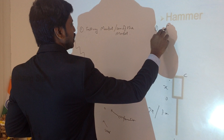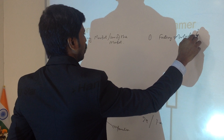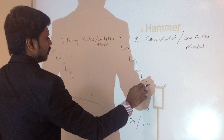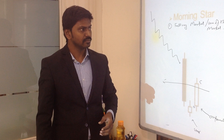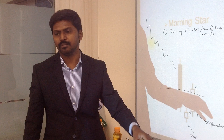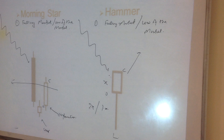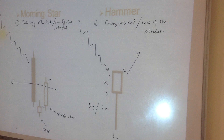The hammer pattern condition is the same as morning star: it must appear in a falling market, ideally at the low of the market. The lower the market position, the more dominant the pattern. In a falling market at the bottom, if a hammer appears, you can assume the market is likely to reverse upward from there.